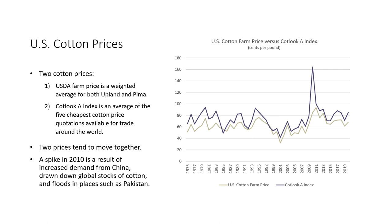There are two cotton prices I will use. First is the farm price reported by USDA, a weighted average for both upland and pima cotton. Second is the Cotlook A Index, which is an average of the five cheapest cotton price quotations available for trade around the world. The world cotton price is more expensive than the U.S. farm price due to transportation costs, but overall the two prices tend to move together. The only notable difference is a dramatic spike in world cotton price in 2010 as a result of increased demand from China, drawn-down global stocks, and floods in places such as Pakistan.